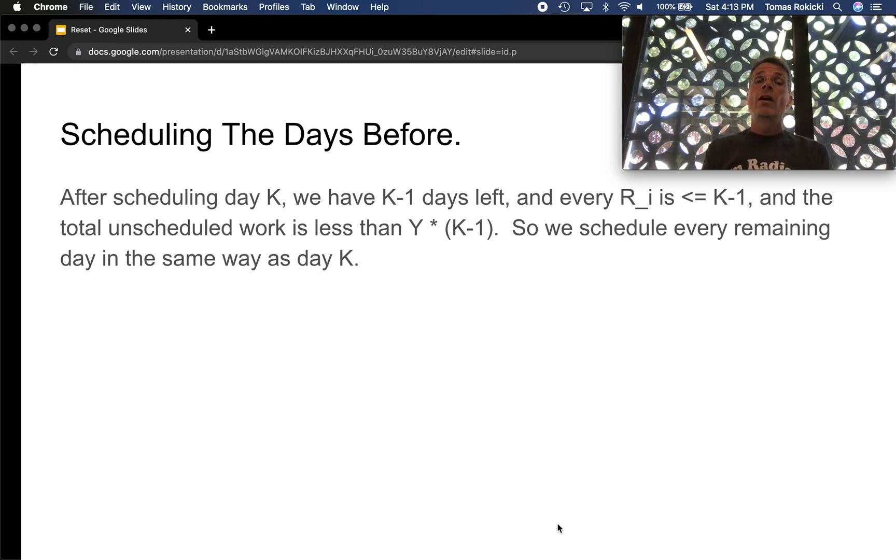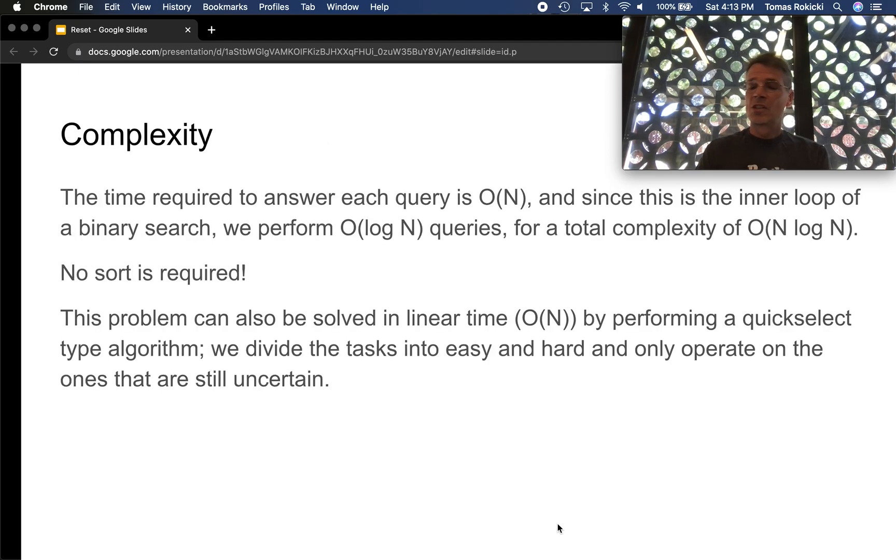After scheduling a given day we have one fewer day left. So after scheduling day one or day k doesn't really matter, we've k-1 days left and every R_i is less than or equal to k-1, and the total unscheduled work is less than y times k-1. So basically we're back to a smaller version of the previous problem. So clearly this works. This gives you a schedule that works.